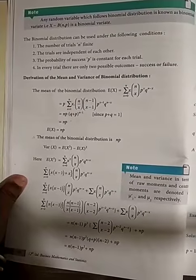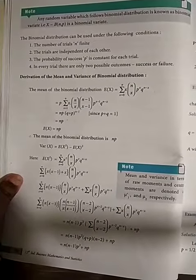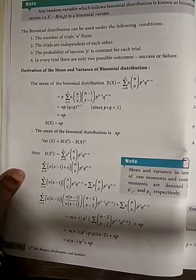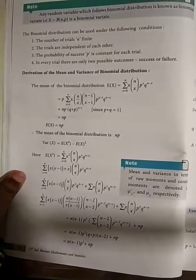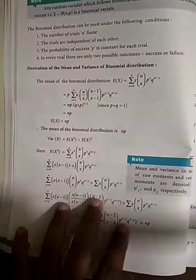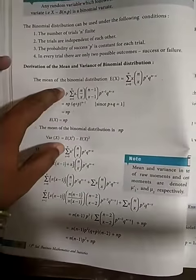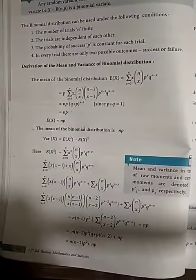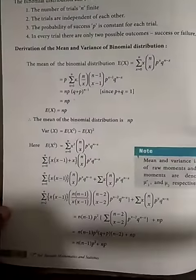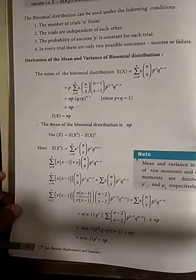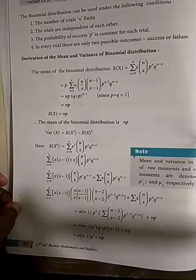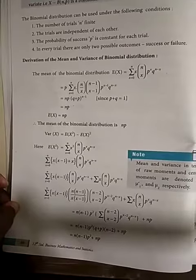At the end of each experiment or trial, the outcome should always be 2 — either success or failure. Now we have to derive the mean and variance for the binomial distribution. You can go through the derivation given in the book — we will take this as an assignment.